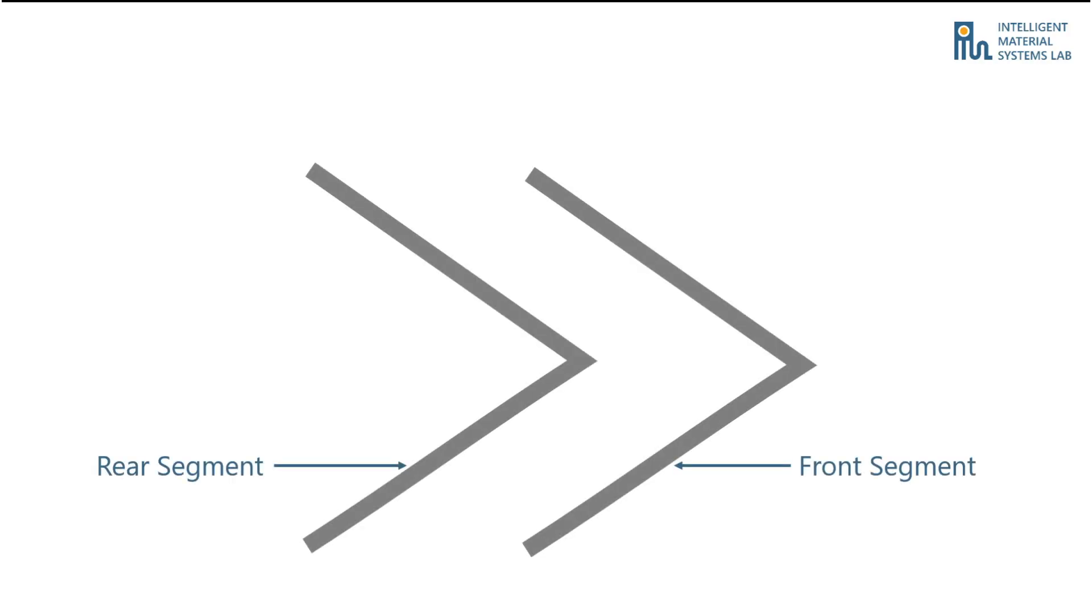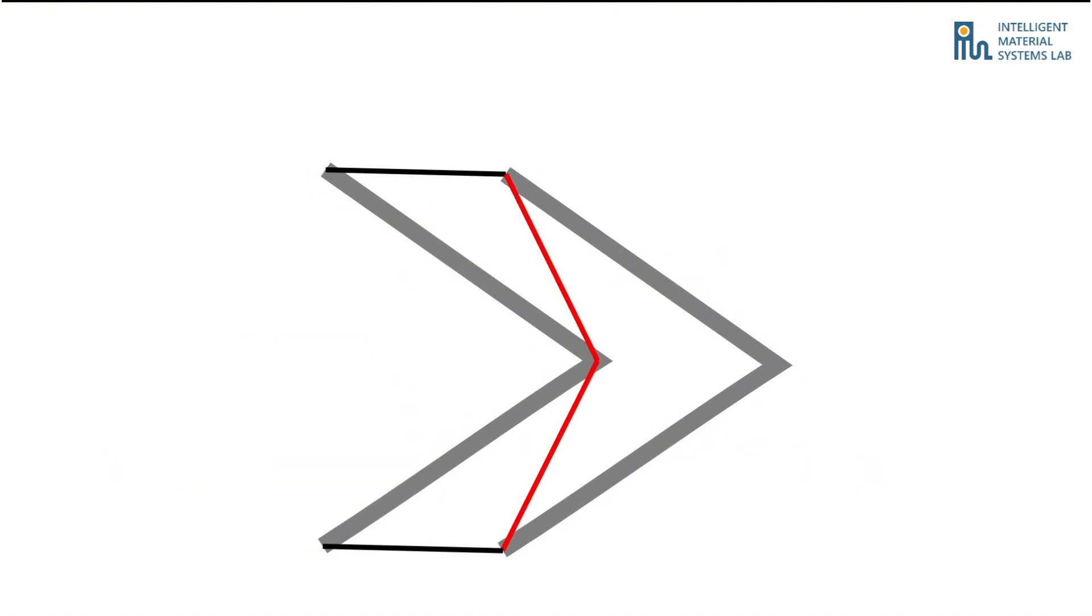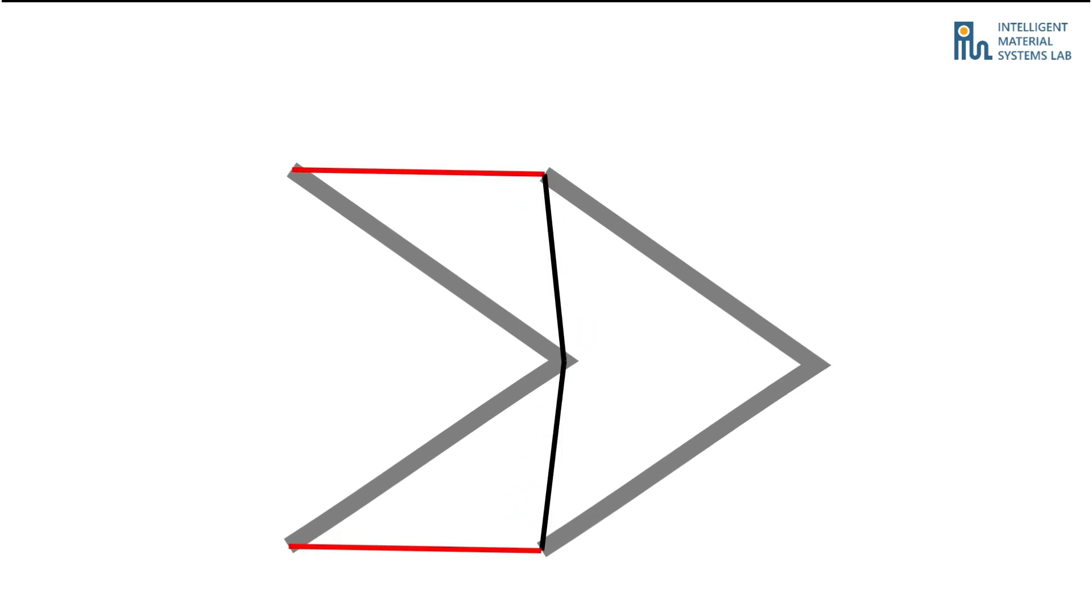So, what drives the locomotion? The robot has two V-shaped segments connected by four sets of RDEAs. Two at the front, and two at the rear. When we activate the front, the RDEAs pull these segments together, and when we activate the rear, they push them apart.